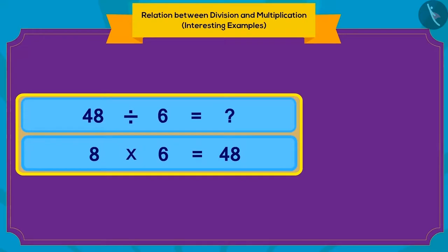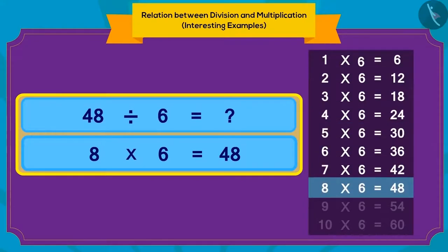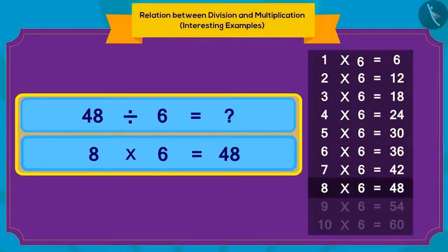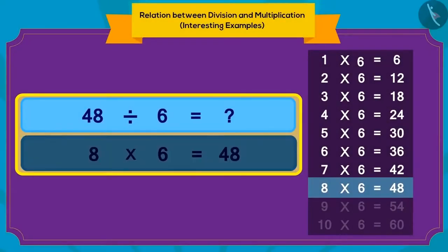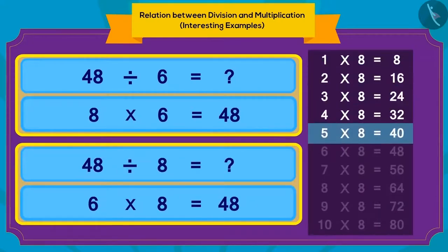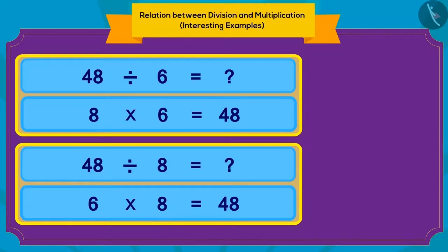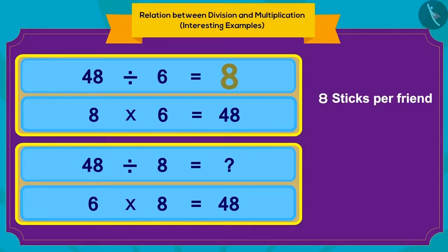So children, in the table of six, what do we multiply with six to get 48? Absolutely correct. Six times eight is 48. And in the table of eight, what times eight equals 48? Correct again. Eight times six equals 48. In this way, we can use multiplication to figure out the answer for division. For example, eight sticks per friend or six friends, it can be found out.